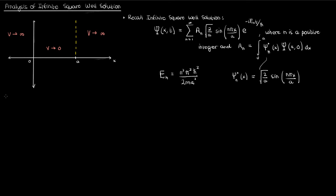So we've got everything set up to apply this infinite square well solution and illustrate some important quantum mechanics concepts. The first thing we'll do is find the expectation value of the position for the nth stationary state, which means finding the expectation value of x for psi sub n of x.